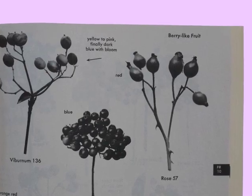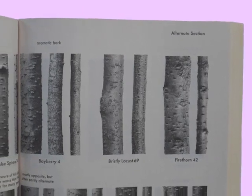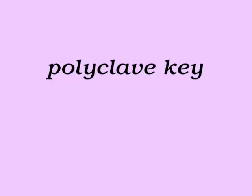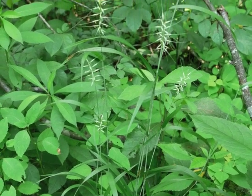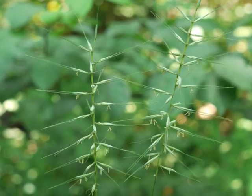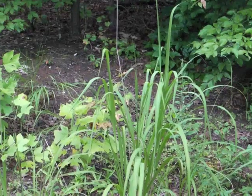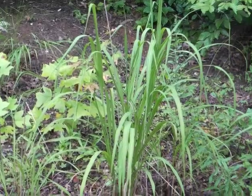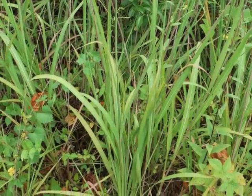There is another method of plant identification referred to as a polyclave, or random access key. This works well with a computer database of plants and their characteristics. You select a variety of characteristics related to grasses, for example, then submit your search request and the computer looks throughout its database for all plants matching the characteristics you checked off.